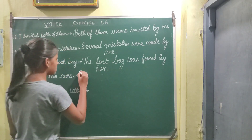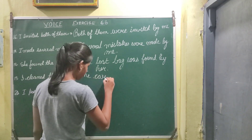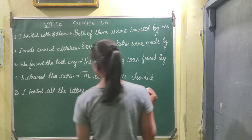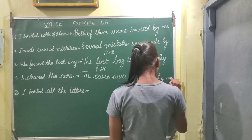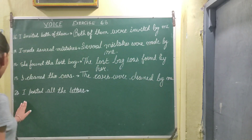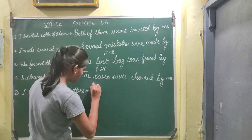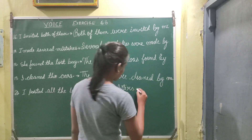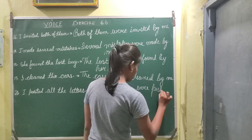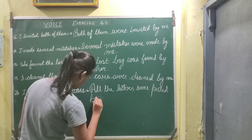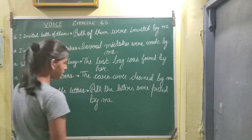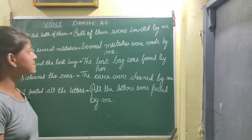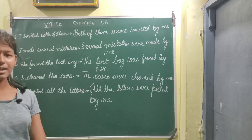Next is 'I cleaned the cars.' So: 'The cars were cleaned by me.' Next is 'I posted all the letters.' So: 'All the letters were posted by me.' With this, our exercise 66 is finished. Next video, exercise 67 — till then, stay tuned.